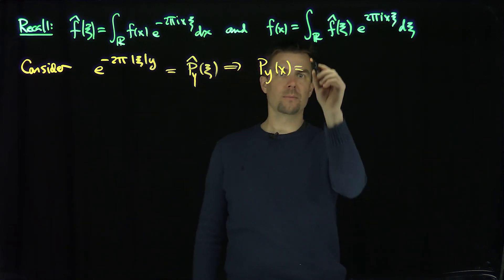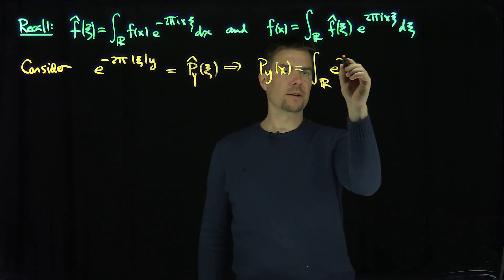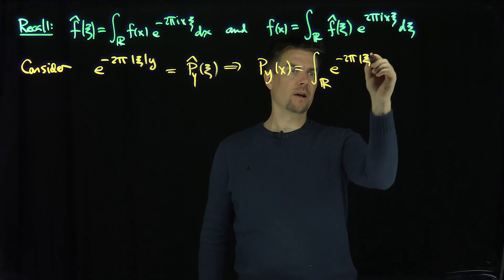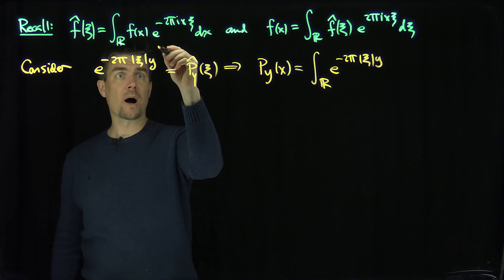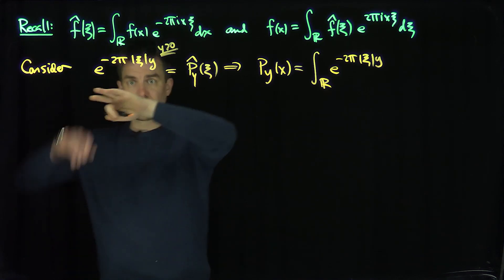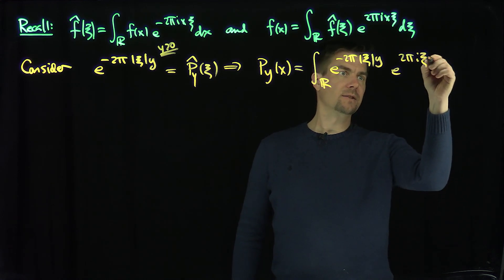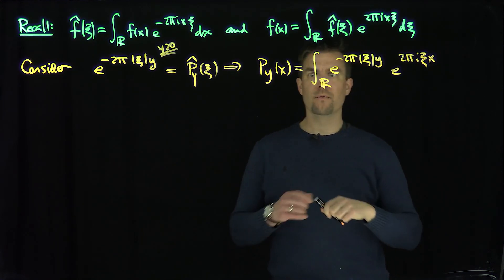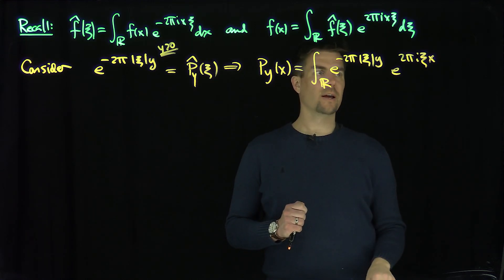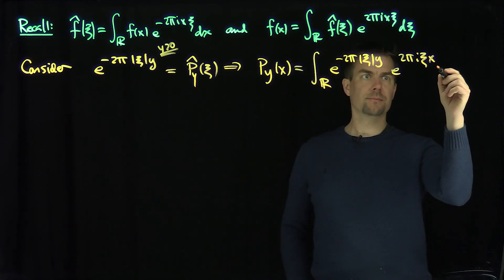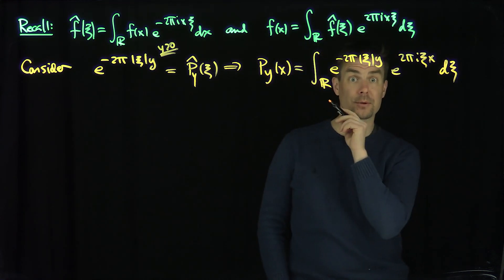I can try to use the Fourier inversion formula. p_y(x) would be the integral over ℝ of e^{-2π|ξ|y} — and of course here we're assuming the upper half space, so y is greater than zero, which makes this function decaying in ξ — times e^{+2πiξx} dξ. So now I have x and y as parameters in an integral with respect to ξ, and we're going to break this integral into two parts.